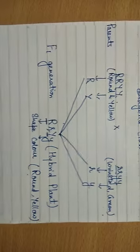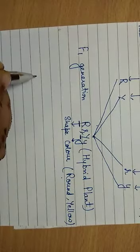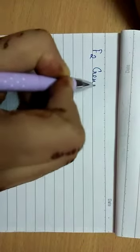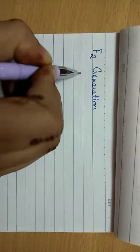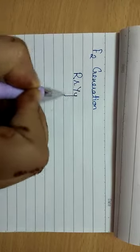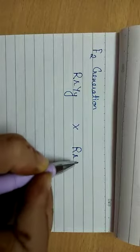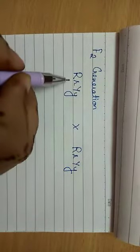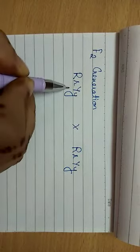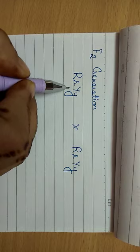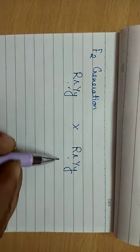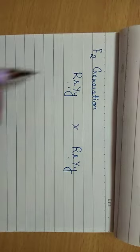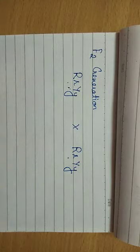So what will happen if we get the second generation of this plant? In F2 generation, we find out the results when we make a self-cross between the progeny obtained in F1 generation. It is very difficult to represent the characteristics of the offspring in F2 generation directly.